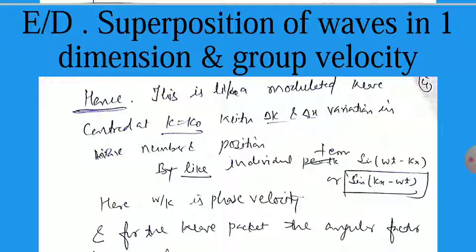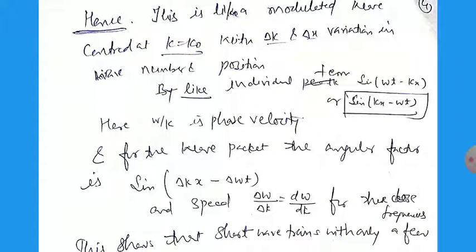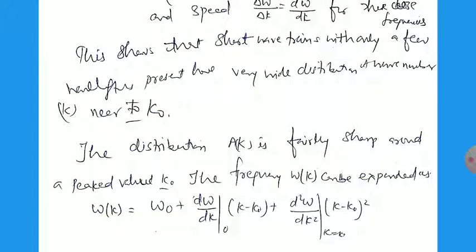Hence this is like a modulated wave centered at k equal to k0, with delta k as the spread in wave number and delta x as the spread in position. For the individual terms, we know that sin(kx minus omega t) represents a single wave, where omega by k is the phase velocity. For the wave packet, the angular factor is sin(delta k times x minus delta omega times t). So the speed is delta omega by delta k, that is d omega by dk, for wave propagation. This shows that short wave trains without well-defined single wavelength have a very wide distribution of wave number k near k0. Out of this region there is a small number of waves, and this group of waves is found in a small area.